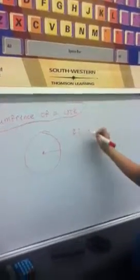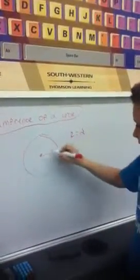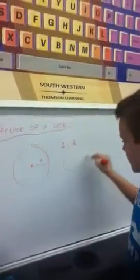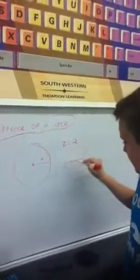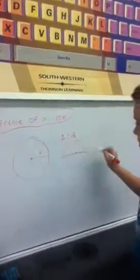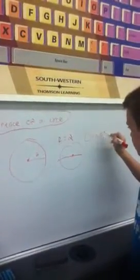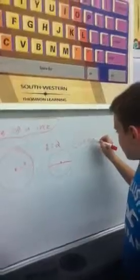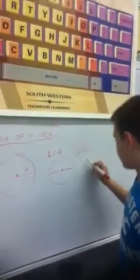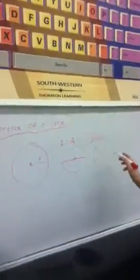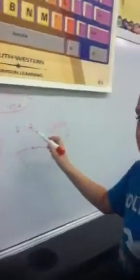So radius is 2, and then all the way across the circle, like this, would be the diameter. Diameter. Okay, so let's say the diameter would be 4, because it's obviously 2 times 2.